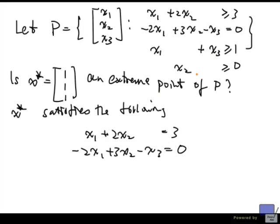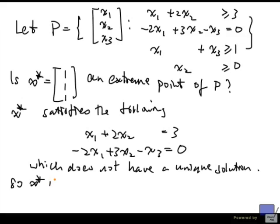And the last one again, the left-hand side is 1, the right-hand side is 0, so it doesn't satisfy that with equality. Now let's look at this system. This is a system with 3 unknowns and 2 equations, and so there cannot be a unique solution. So x star is not an extreme point.